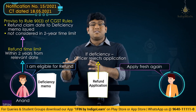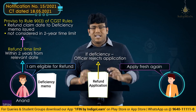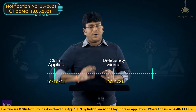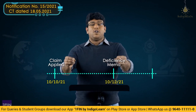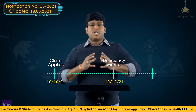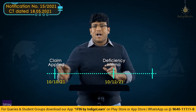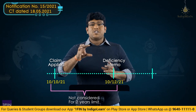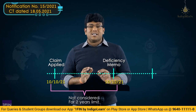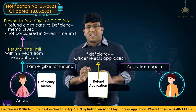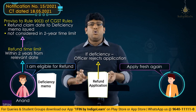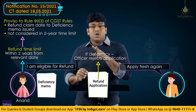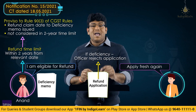For example, Anand applied for refund on 10th October 2021, and the officer gave a deficiency memo on 10th December 2021. For the purpose of calculating the two-year time period, the period from 10-10-21 to 10-12-21 shall be excluded. So in computing the two years, the time from the date of filing the application till the date the deficiency memo is issued or communicated shall be excluded.